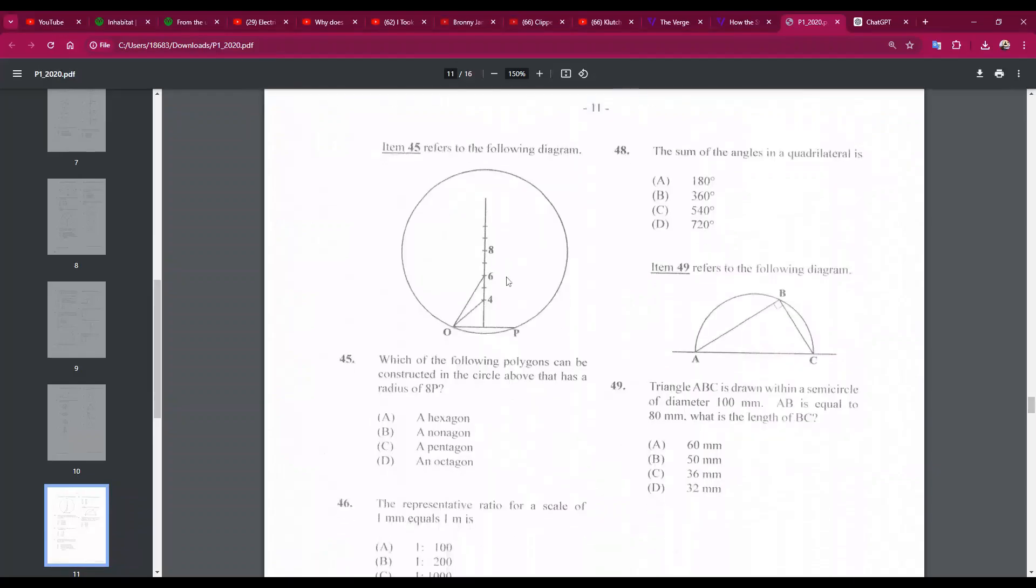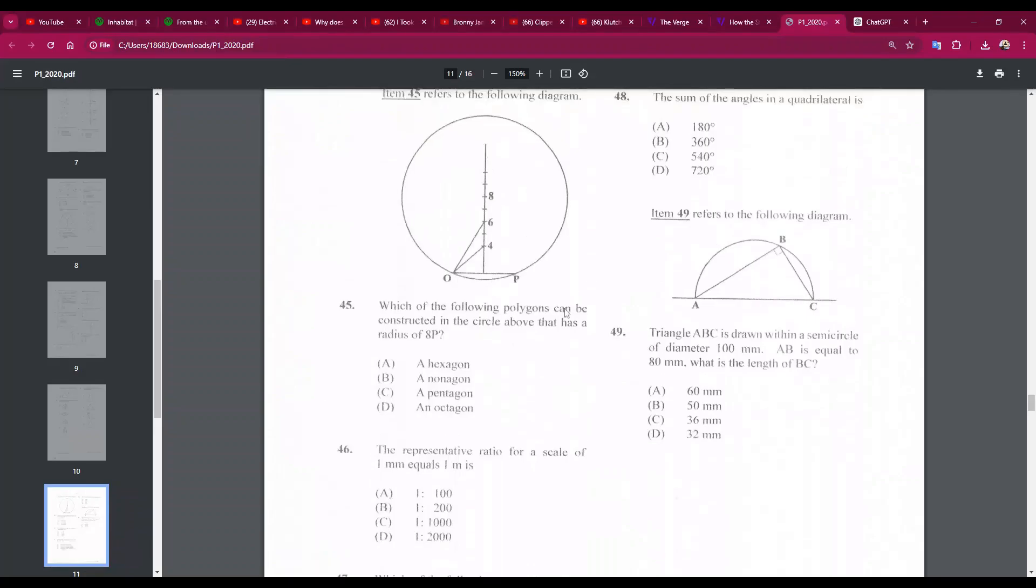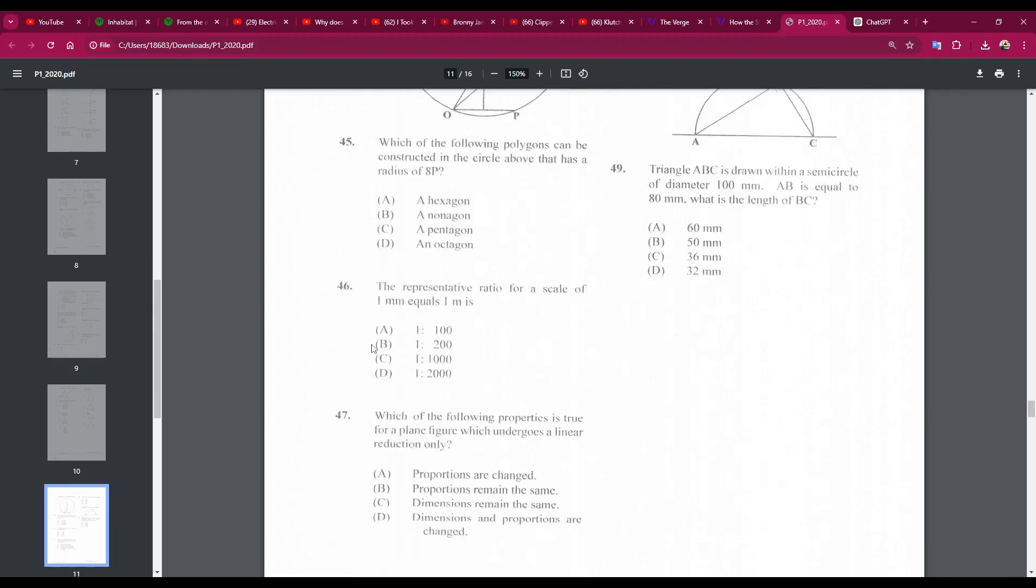Number 45: which of the following polygons can be constructed given the circle above that has a radius of 8P? So this is 8 and this is P, so this is a radius. And the answer will be an octagon, an eight-sided polygon.